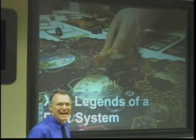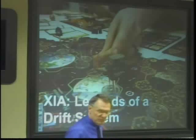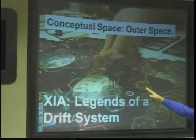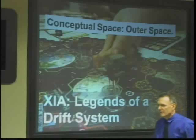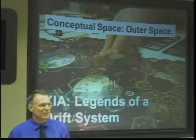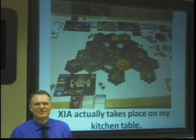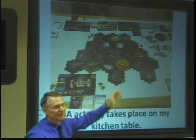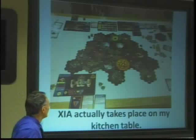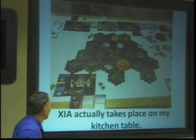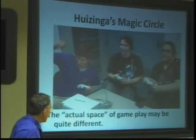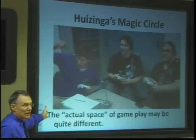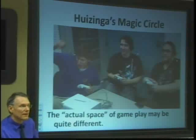Here's the conceptual space of Zaya: Legends of a Drift System — it's outer space where spaceships are moving around, exploring, pirating, and doing all the things you might do in a spaceship adventure. But when I took that photo, Zaya was actually taking place on my kitchen table, where the map is being built as we play. So the actual space of gameplay may be quite different from the conceptual space of gameplay, and in computer games, it always is.